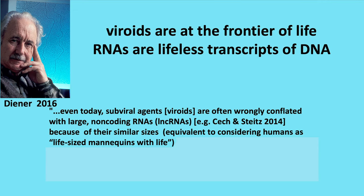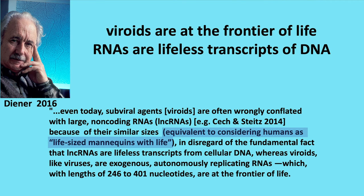Diener said specifically: even today, subviral agents — viroids — are often wrongly conflated with large non-coding RNAs because of their similar sizes. But that's a terrible mistake. It's equivalent to considering humans as life-size mannequins — in disregard of the fundamental fact that large non-coding RNAs are lifeless transcripts from cellular DNA, whereas viroids, like viruses, are exogenous, autonomously replicating RNAs which, with lengths of 246 to 401 nucleotides, are at the frontier of life.